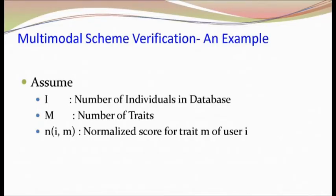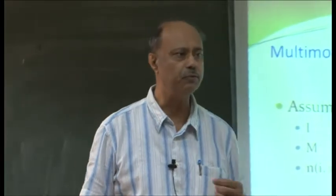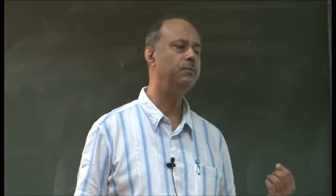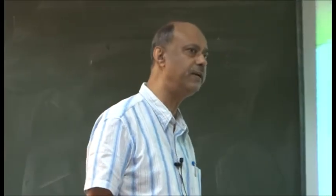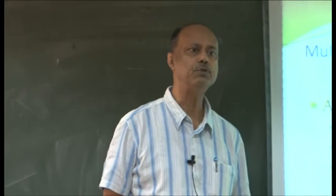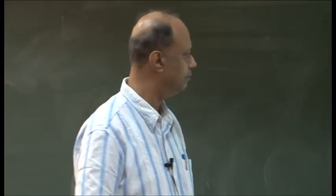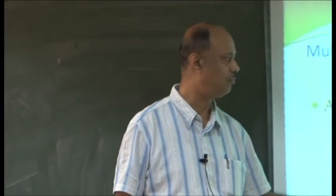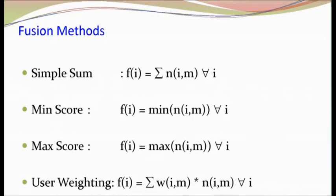Why do I say normalized score? Because the scores will not all lie between 0 and 1. Some scores lie between 0 and 1000, some between plus x to plus y, some between minus x to plus y, some in decimal format, some in integer format, and some are dissimilarity scores. All of them should be brought under one umbrella so that you can combine them. That is why we normalize — n_im means the normalized score for trait m of user i.